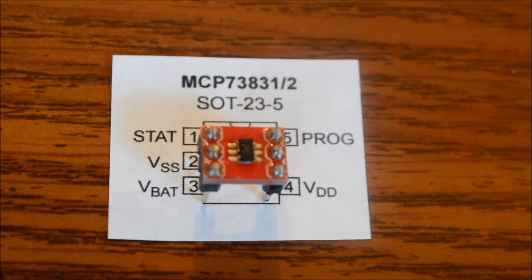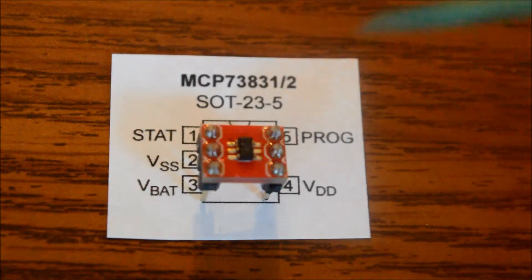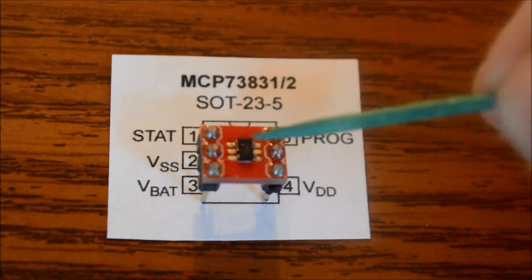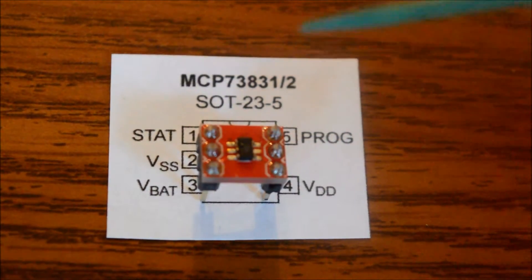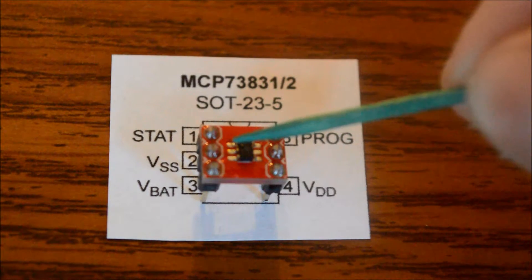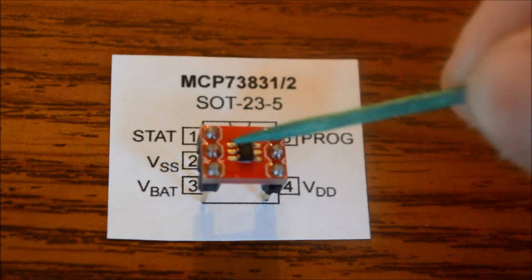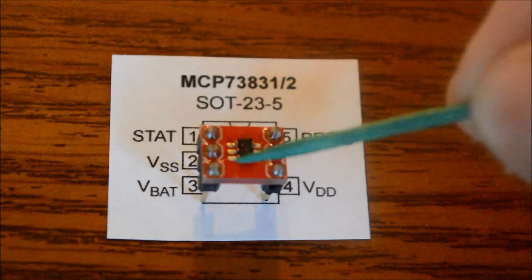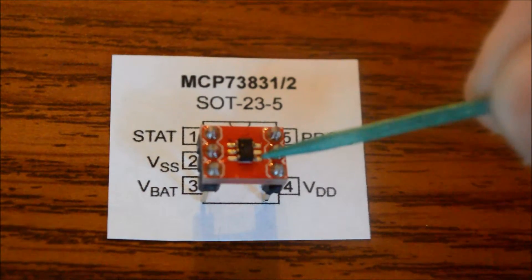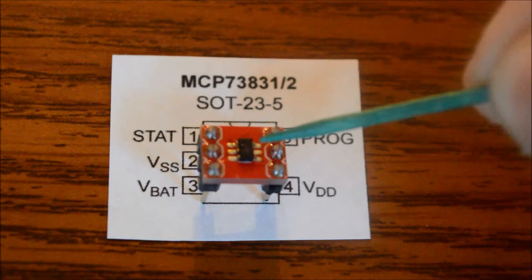I will now show you a close-up of the actual lithium-ion charge management controller. This is the IC. It has five pins. The first pin is STAT. The second pin is VSS. The third pin is VBAT. The fourth pin is VDD. And the fifth pin is PROG.